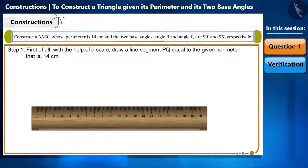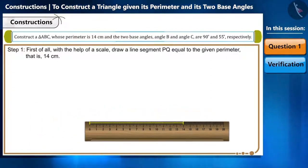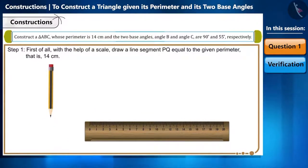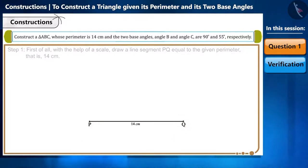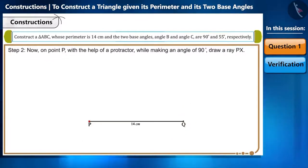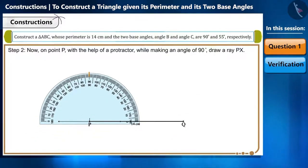Step 1: First of all, with the help of a scale, draw a line segment PQ equal to the given perimeter, that is 14 centimeter. Step 2: Now on point P, with the help of a protractor, while making an angle of 90 degrees, draw a ray PX.